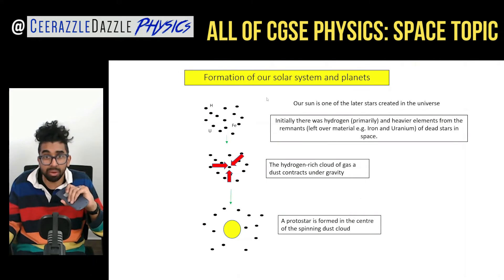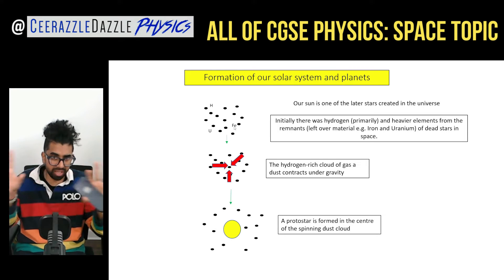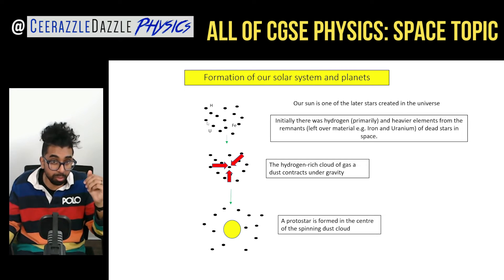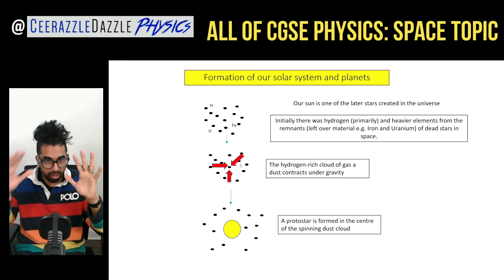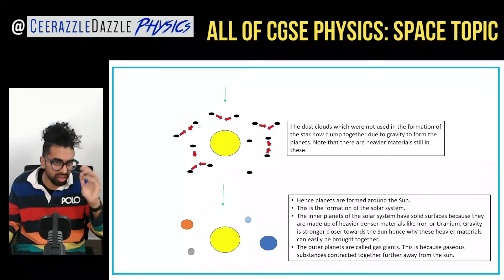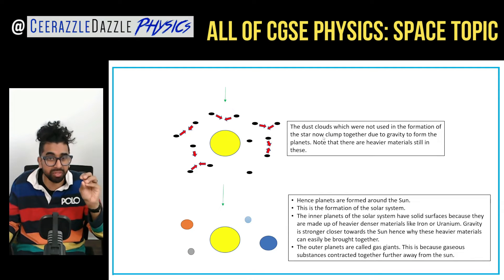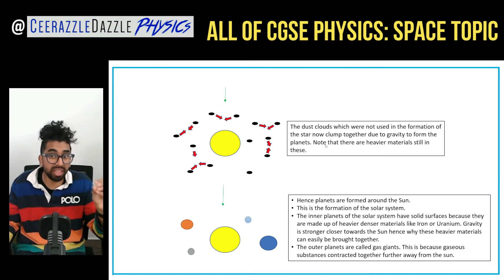The formation of our solar system and planets. Our Sun is not the same as the first stars created, because we have hydrogen but we also have heavy elements from supernova explosions of earlier stars. So our Sun is formed from the remnants of dead stars. All the elements clump together once again to form a protostar, and not all of it clumps together — the material that doesn't clump together will then clump together separately. Those dust clouds not used in the formation of the star clump together due to gravity to form the planets. Note that these planets contain heavier elements.